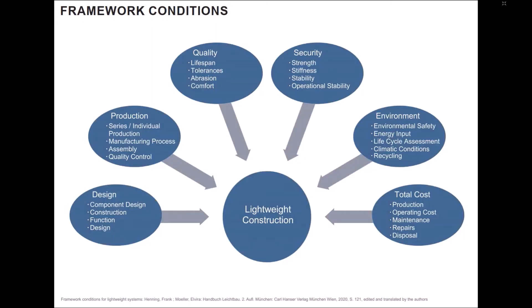The aim of filigree or lightweight construction is to reduce the weight or the mass of the building materials used and to plan the optimal design. In order to design the planning process in a targeted manner and to select the suitable construction, the framework conditions should be defined first. These can be evaluated and compiled according to certain categories so that as many questions as possible are clarified in advance.